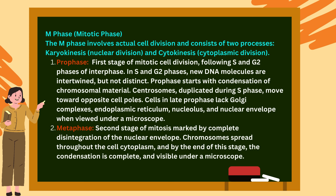Second is metaphase — the second stage of mitosis, marked by complete disintegration of the nuclear envelope. Chromosomes spread throughout the cell cytoplasm, and by the end of this stage, the condensation is complete and visible under a microscope.